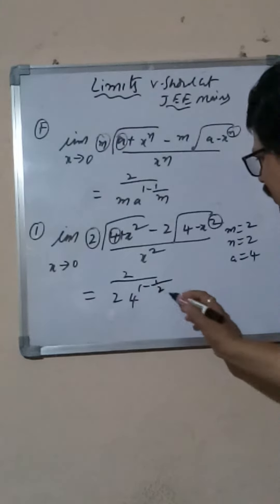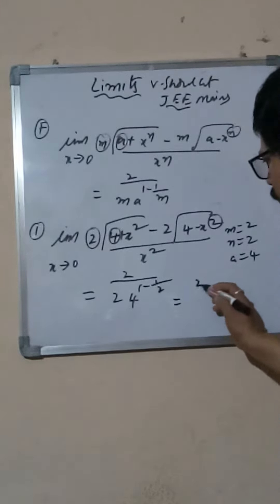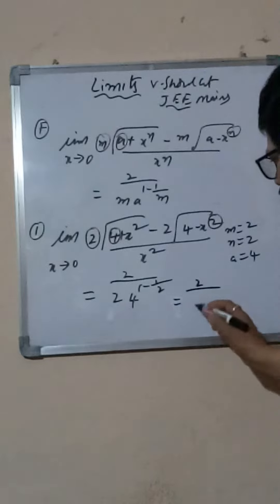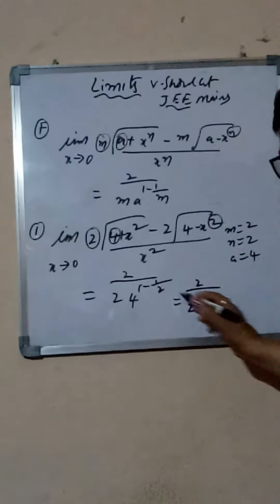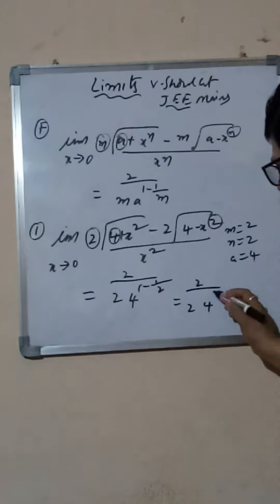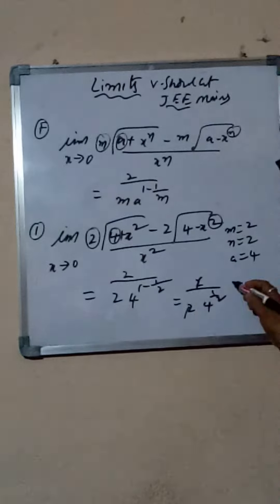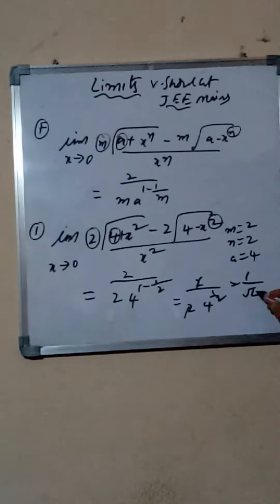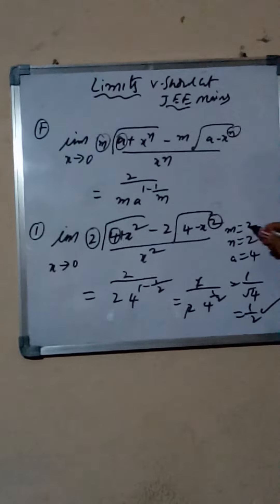Now simplify: 2 divided by 2 gives 1, then 4 power (2 minus 1) means 4 power 1 by 2. The 2s cancel, giving 1 divided by root 4, which equals 1 by 2.